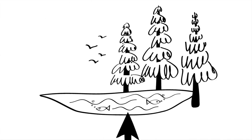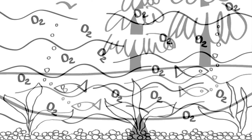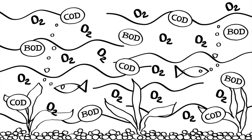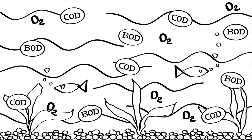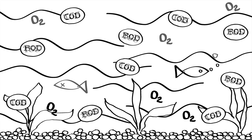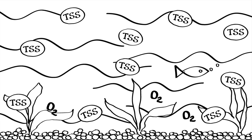As effluent discharges enter receiving streams, they contribute BOD and COD, which can diminish dissolved oxygen levels if they are not effectively treated. Low dissolved oxygen levels can induce fish kills and reduce reproduction rates in aquatic biota. Discharge of suspended matter, or TSS, may also deplete dissolved oxygen if not effectively removed from effluent.